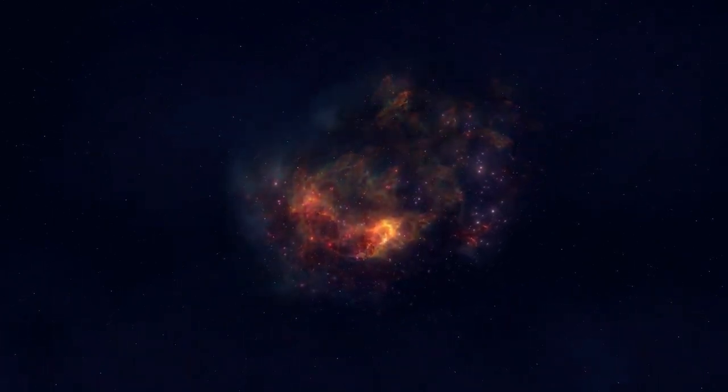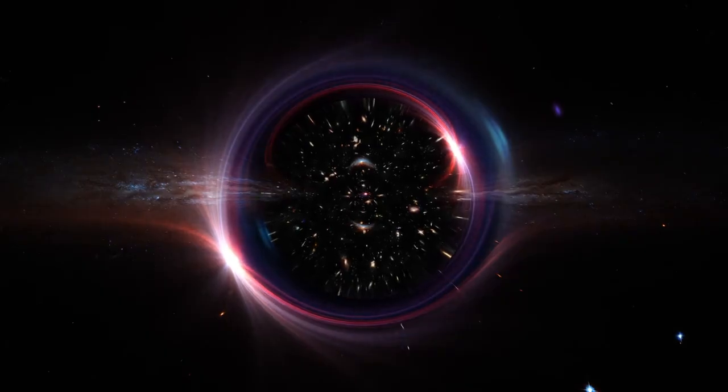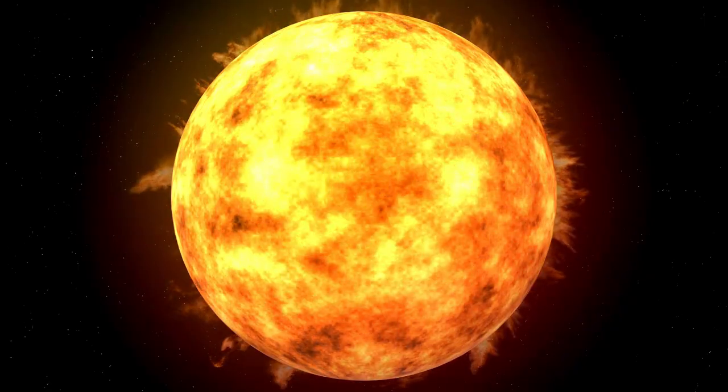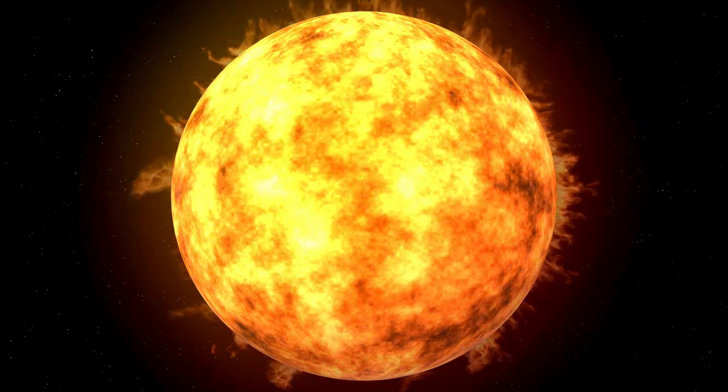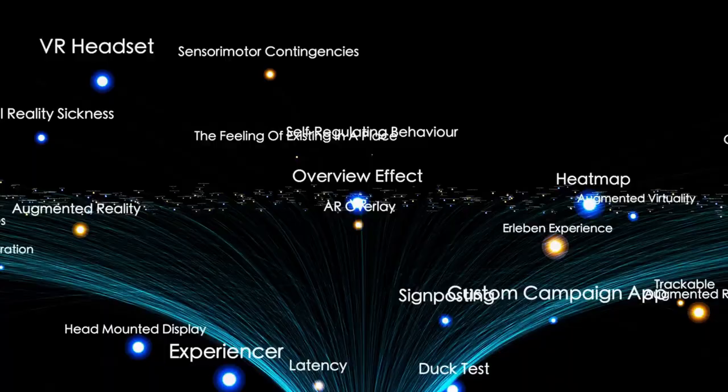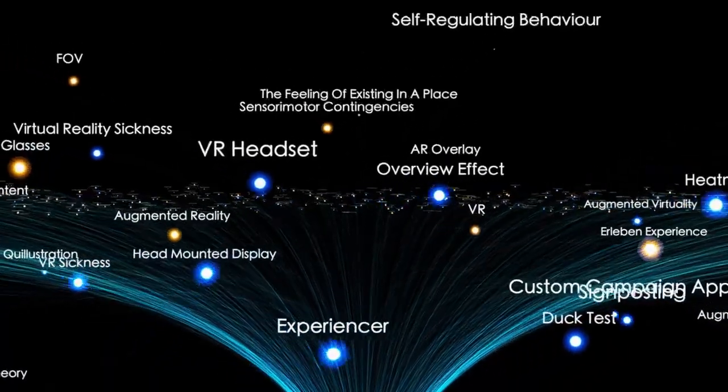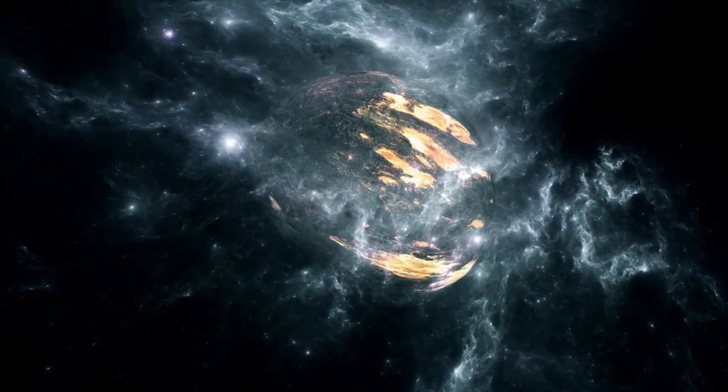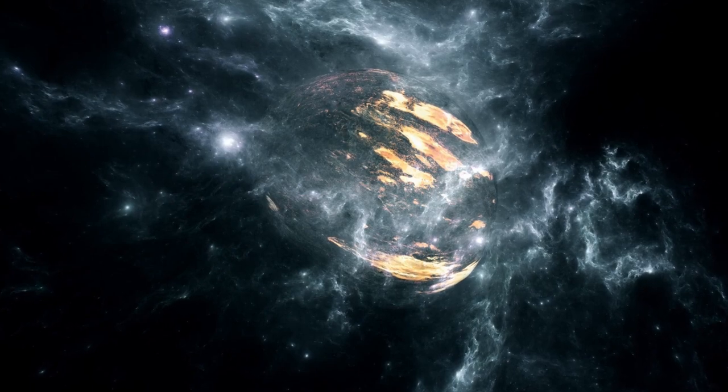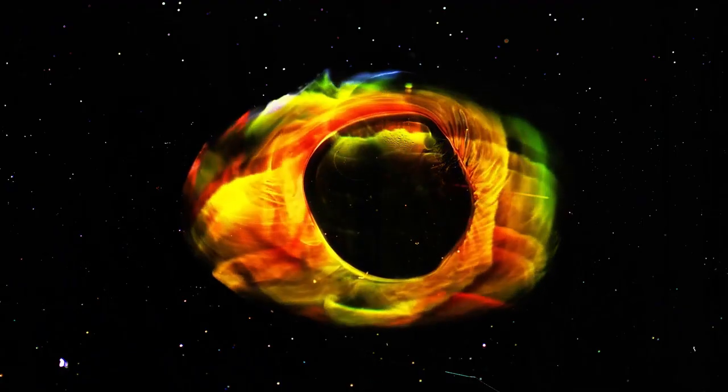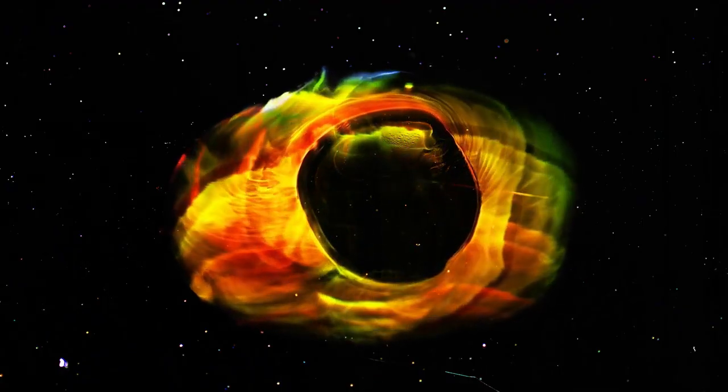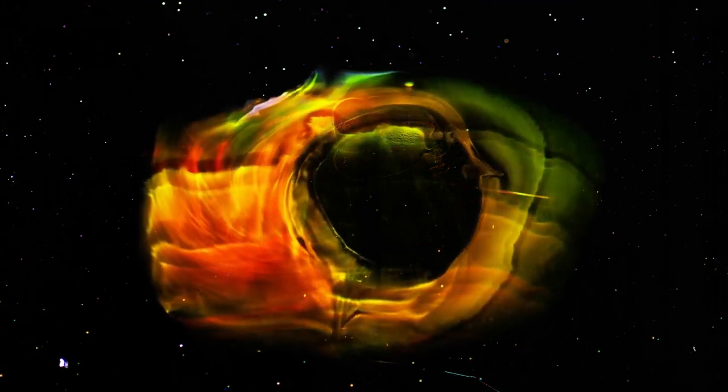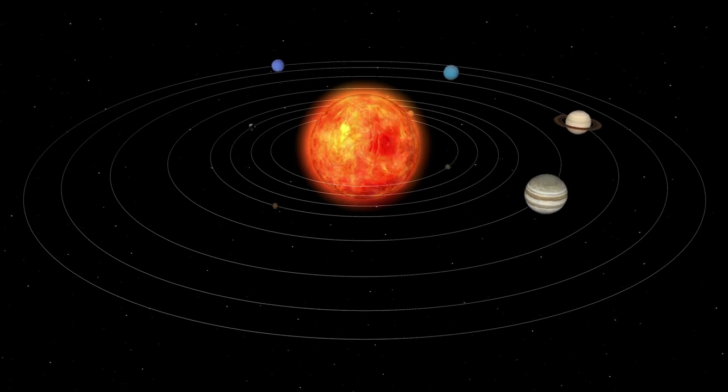So why is Betelgeuse such a significant star? Situated in the Orion constellation, which has featured in myths and astronomical lore for centuries, Betelgeuse is not only large and luminous, but also easy to observe with the naked eye. For scientists, it offers a unique opportunity to study the life cycle of massive stars. Unlike our Sun, which will fade gently over billions of years, red supergiants like Betelgeuse live fast and die young. It's well into its final stages of life, but the question has always been when will it explode?